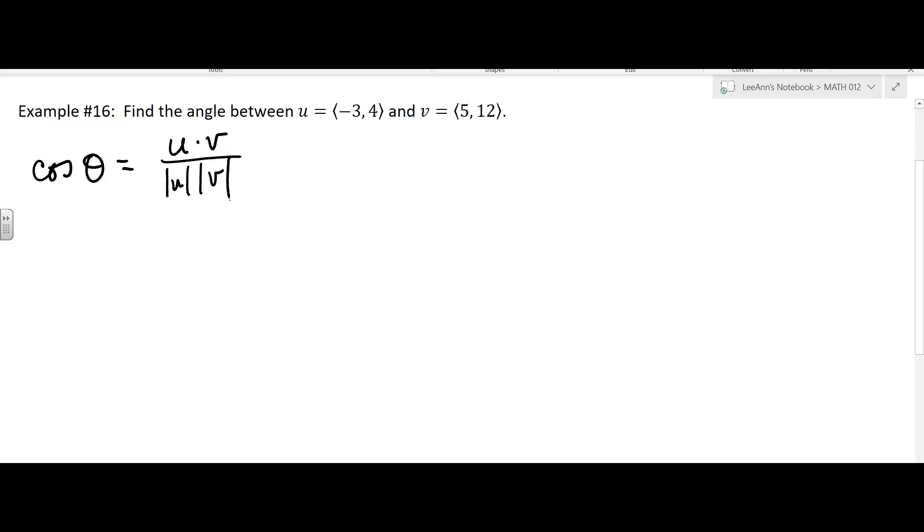Okay, so it's a lot of little pieces. We've got a dot product we need to find. So let's find the dot product u dot v, which is going to equal negative 3 times 5 plus 4 times 12. You know what, I think we did that one before, it wound up being 33 if I remember correctly.